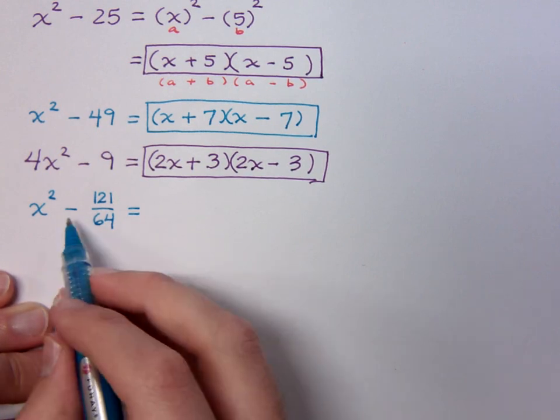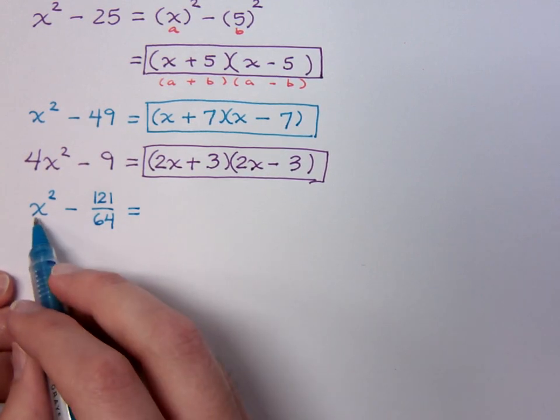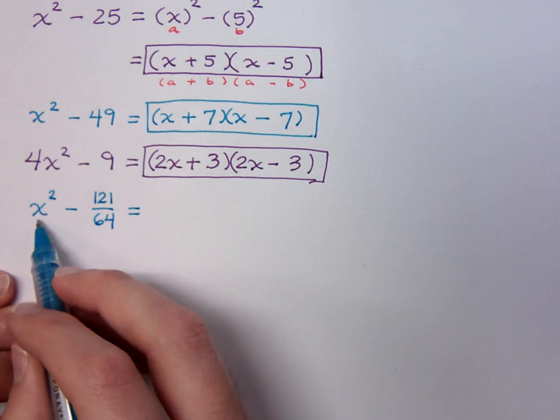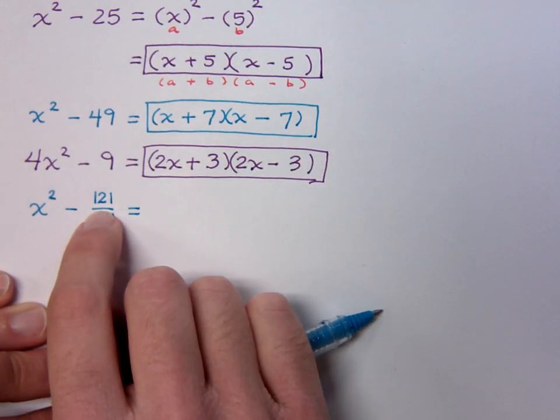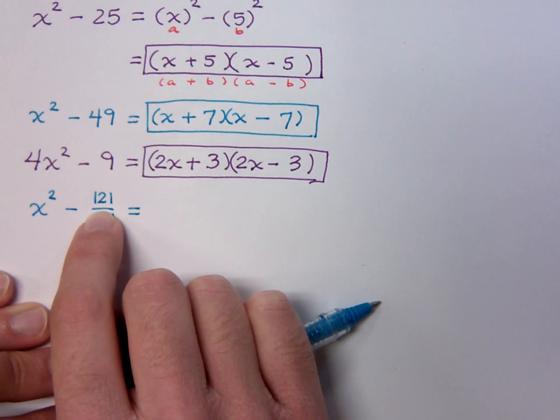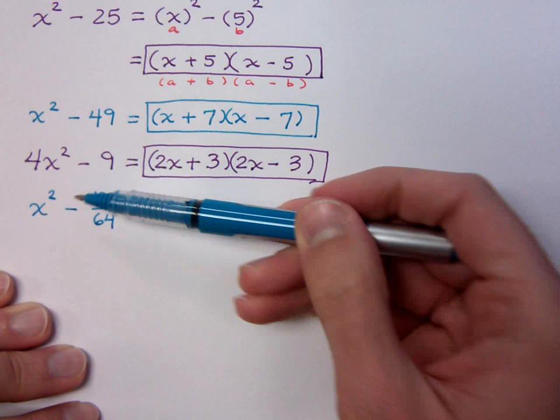Well, here's something you need to know. This is a difference, so we can look at doing a difference of squares. This guy is a square, obviously, x². What about this fraction? If I had just this guy right here, 121 is a square. What about this 64? He's a square as well.